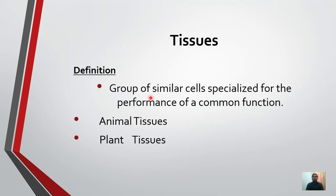Tissues: a group of similar cells specialized for the performance of a common function. Tissues kya hai? Similar cells ke group, jo kya specialized hote hain, ya dedicated hote hain, for the performance of a common function. For example, epithelial tissues, jo hum later on study karenge, us ke baad plant ke case mein ground tissues ya meristematic tissues.